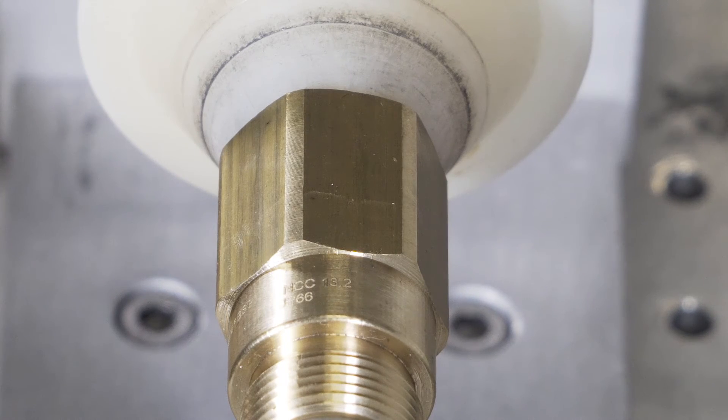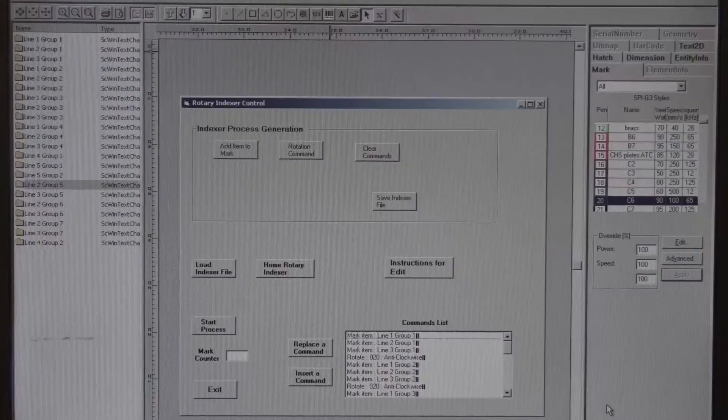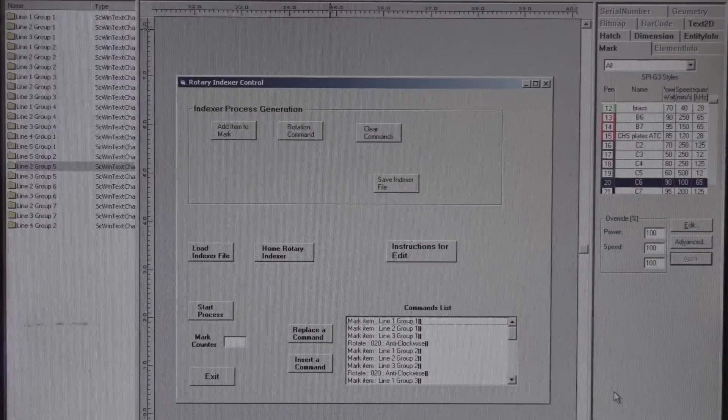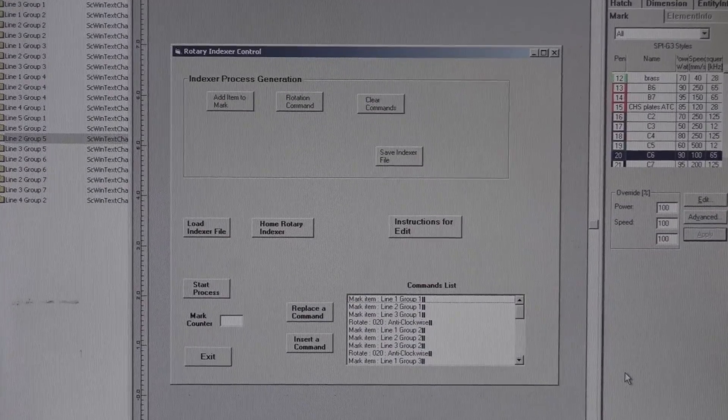The ThinkLaser software control for the rotary device allows for a simple pull-down selection format when setting complex job files such as this.